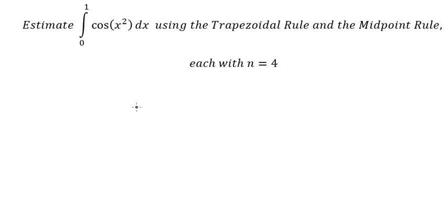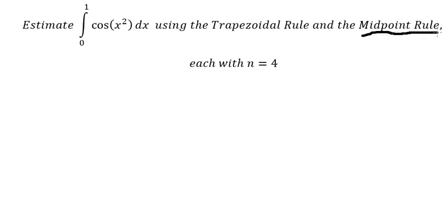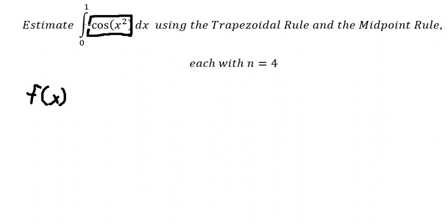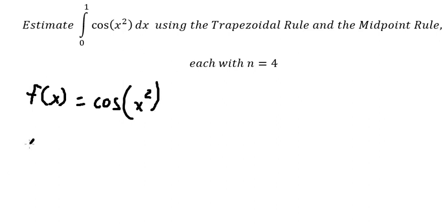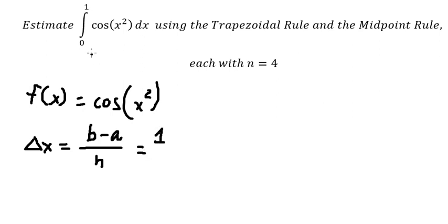Hey guys, welcome back to my channel. Today I want to estimate the value of this integral using the Trapezoid Rule and the Midpoint Rule. For the first one, I need to put f(x) which is cosine of x squared. The next one is delta x, that is b minus a over n, where b equals 1 and a equals 0.